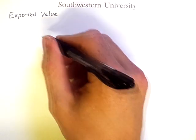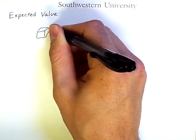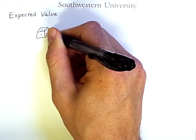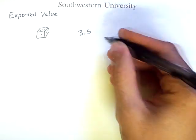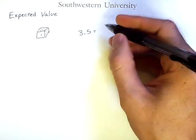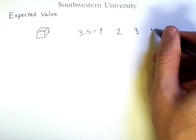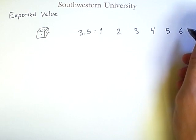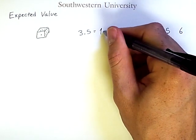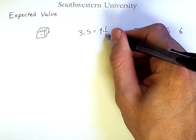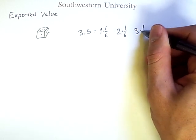For example, the expected value of a die roll is 3.5. The reason for this is that if you consider each possibility—1, 2, 3, 4, 5, and 6—and you multiply it by the likelihood of its occurrence, which for a six-sided die, there's a 1/6 chance of each result.